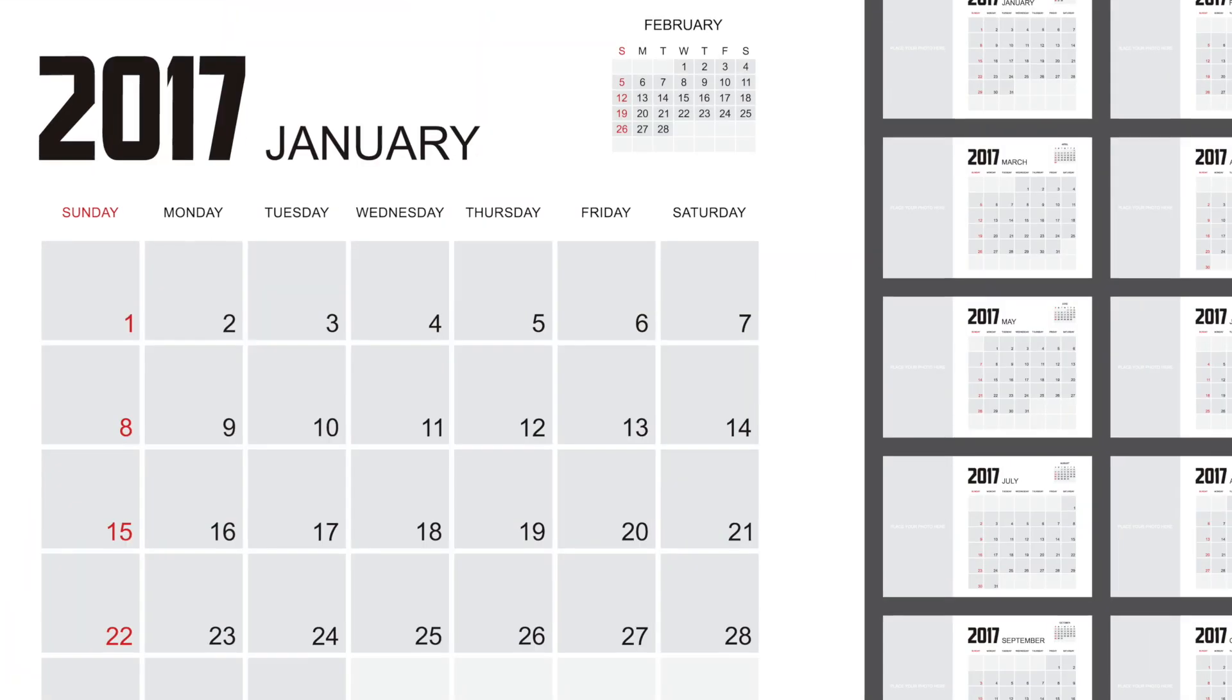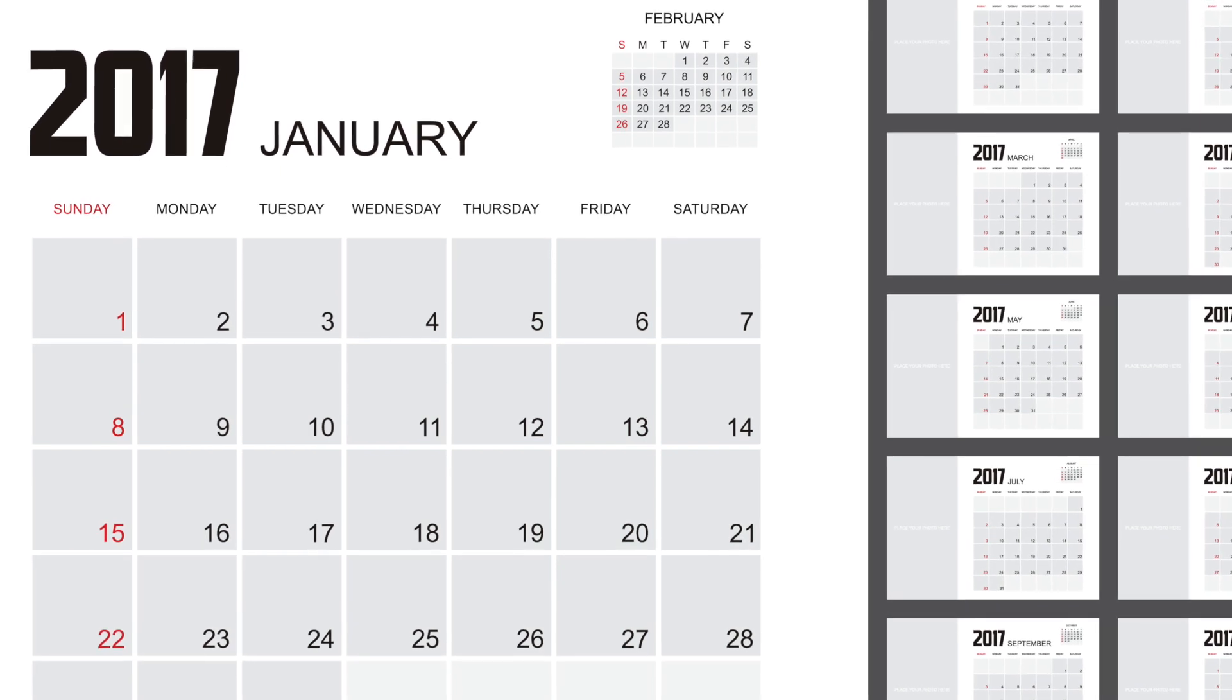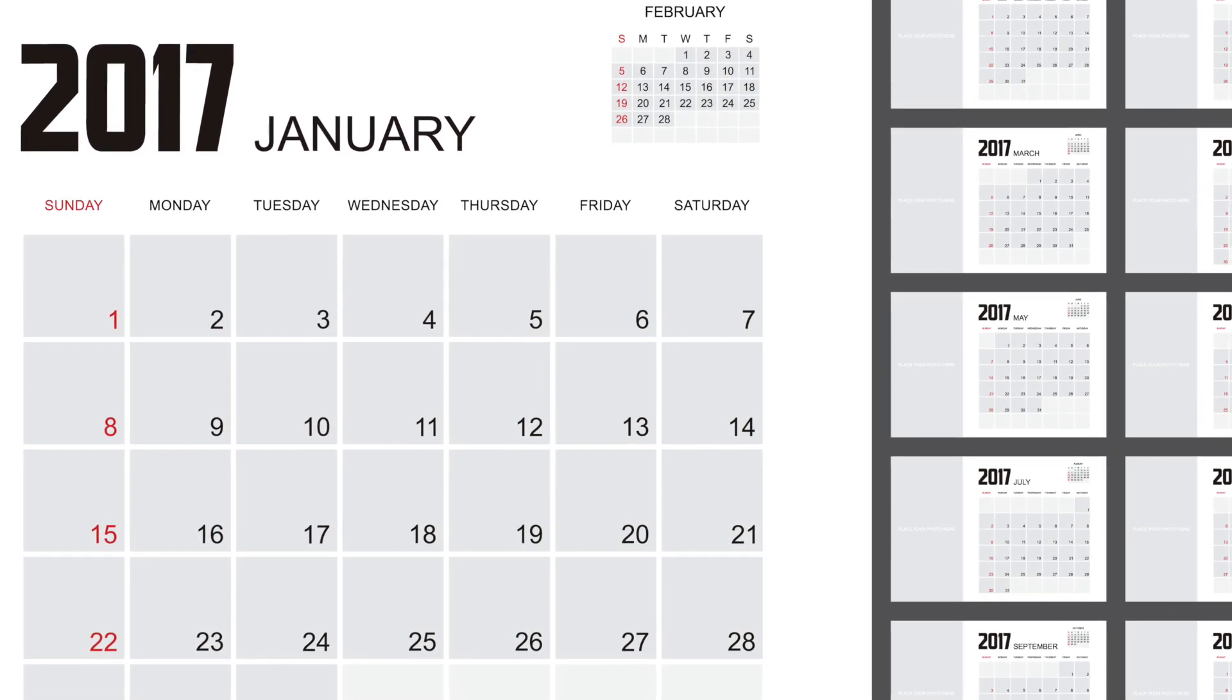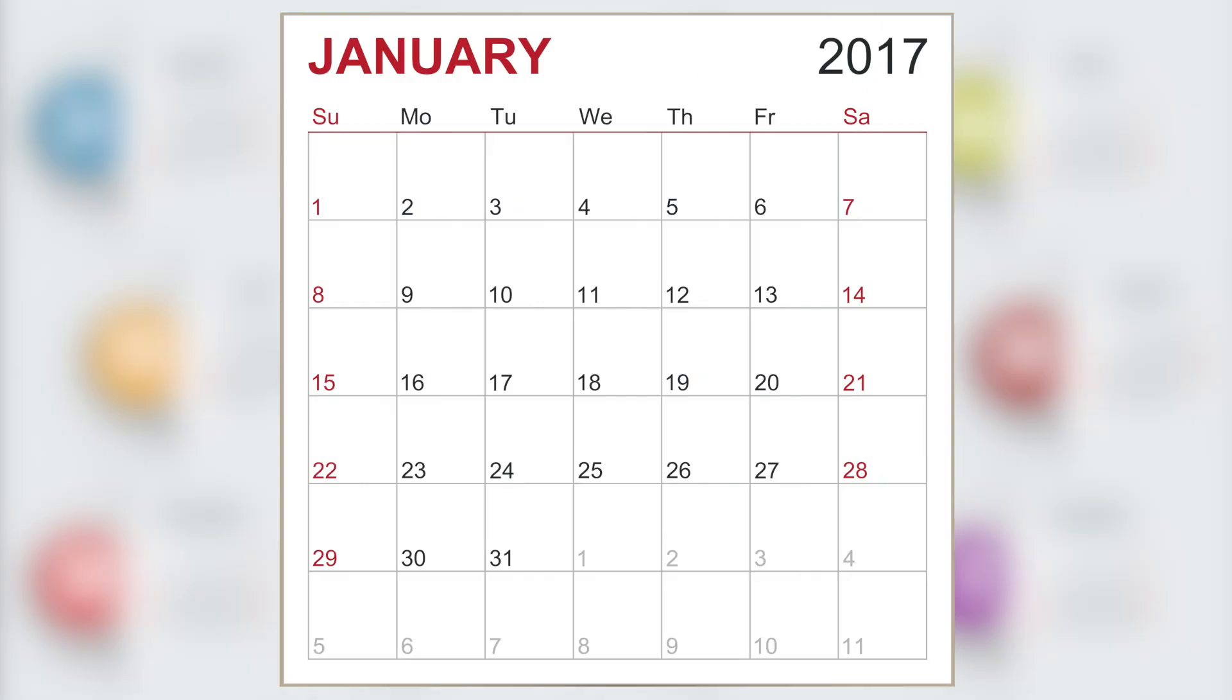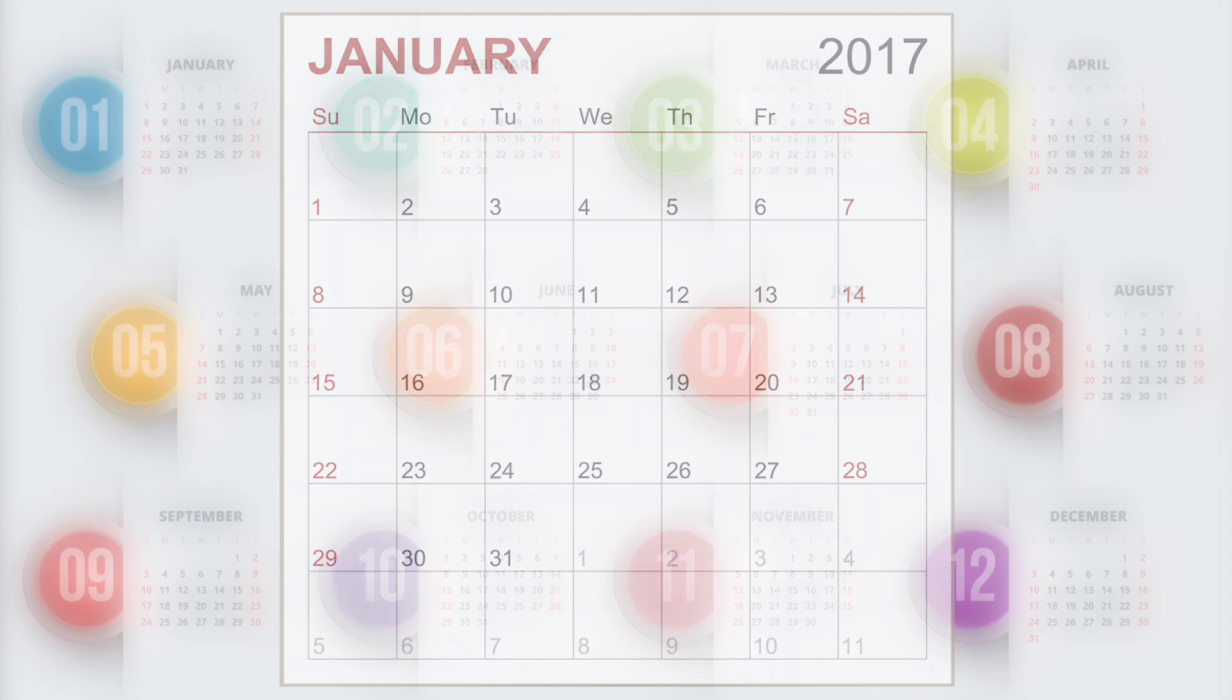What exactly is a calendar? A calendar is basically a chart showing the different days of the year. There are yearly, monthly, weekly, and daily calendars. Most calendars show one month at a time, but there are some...